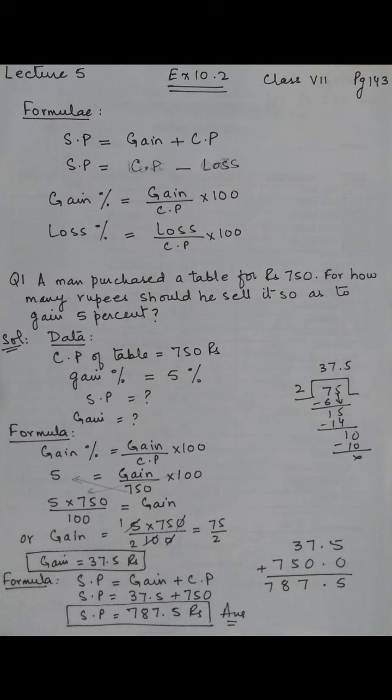We'll apply the gain formula. Gain percent is equal to gain upon CP multiply by 100. The gain percent is given as 5% is equal to gain upon CP. The CP value is 750.